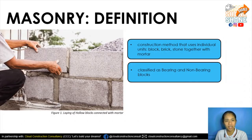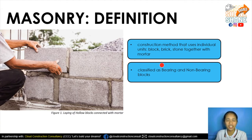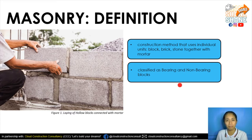To define masonry works, it is a construction method that uses individual units — whether it can be a block, a brick, or stone — together with mortar. Mortar is a composition of sand and cement, which is different from concrete. Concrete is made of aggregate, sand, cement, and water, while mortar has no aggregate — it is just made of sand, cement, and water.